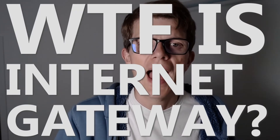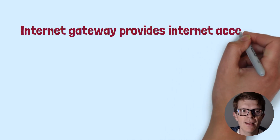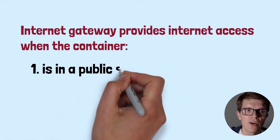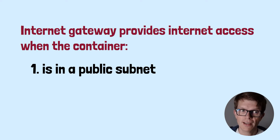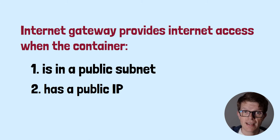Now that you've got VPCs and subnets sorted out, you're ready to deploy a container — but not exactly, because if you want to deploy a container that needs internet access, there's still one missing piece: the AWS Internet Gateway. This is a resource that provides access from a container to the internet, as long as the container meets two criteria: first, it must be deployed into a subnet that routes external traffic through the internet gateway, known as a public subnet; and second, the container must have a public IP. With these met, the container can make requests out to the internet and also receive traffic from the internet.